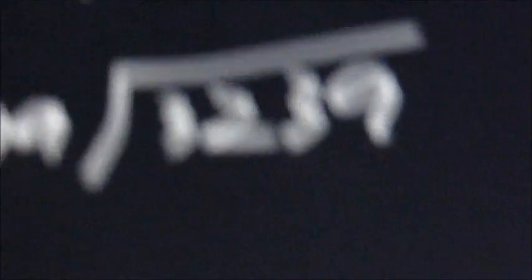The first one I'm going to do is 3239 divided by 79. Change this into long division, so say 79 into 3239. 79 divided into 3239.